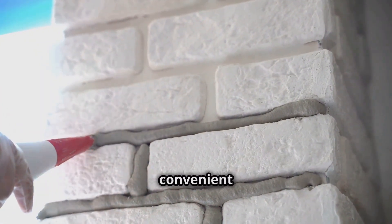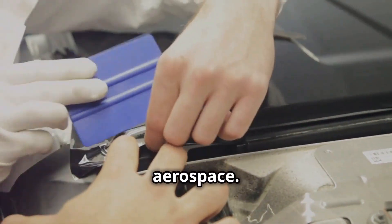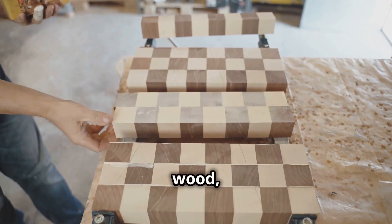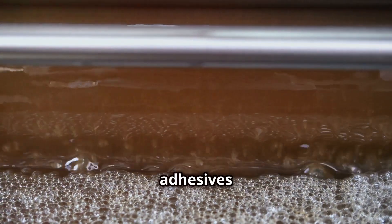Adhesives are more than just convenient—they're also crucial in industries like construction, automotive, and aerospace. Epoxy adhesives, for example, are used to bond metal, wood, and plastic together in everything from cars to airplanes. These adhesives are strong enough to withstand heat, cold, and even water, making them incredibly versatile.